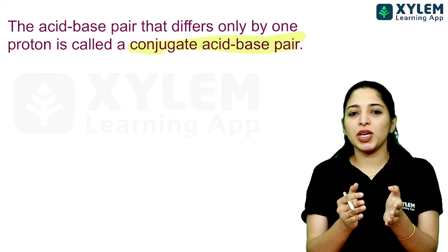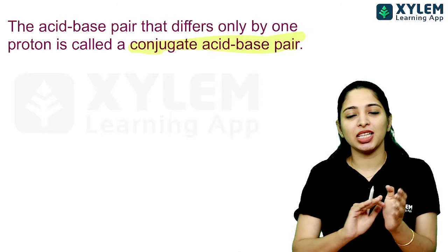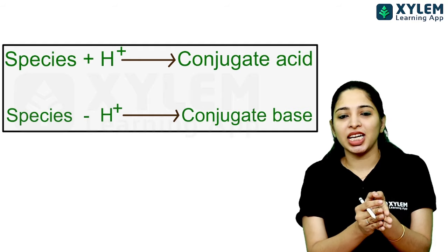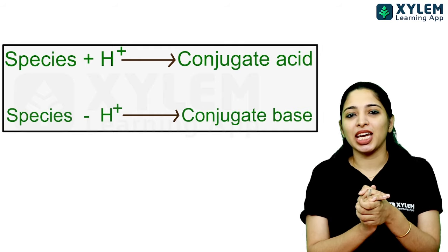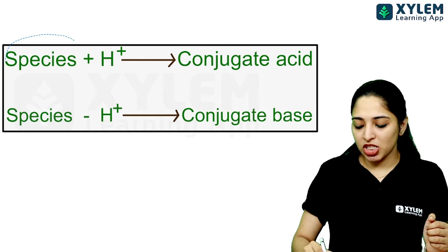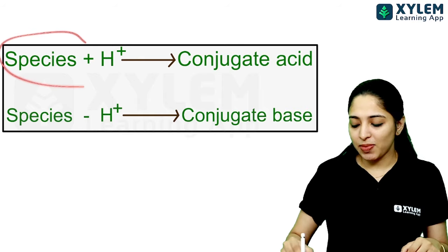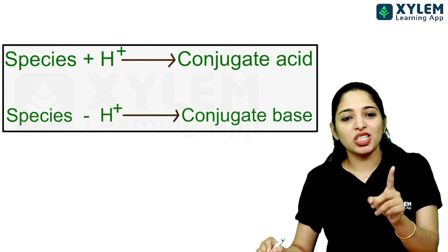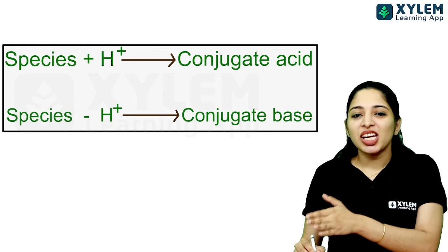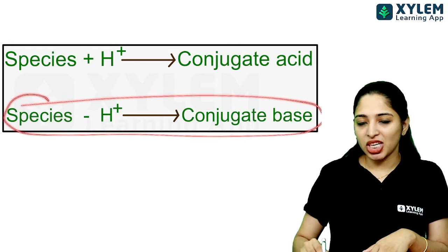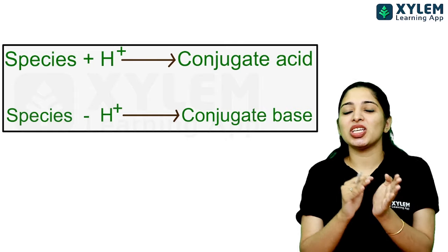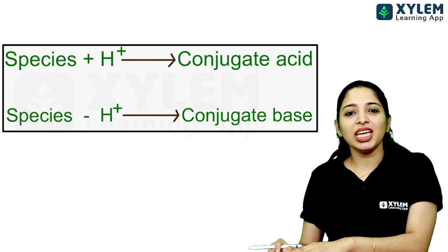Some questions come up about finding conjugate acids and bases. It's easy: if you add a proton (H+) to a species, you get the conjugate acid. If you remove a proton (H+) from a species, you get the conjugate base. So: species plus H+ gives conjugate acid, and species minus H+ gives conjugate base.